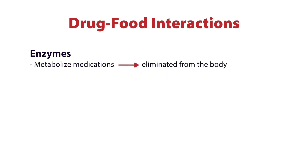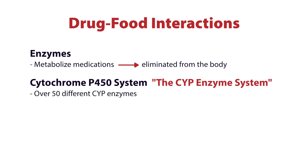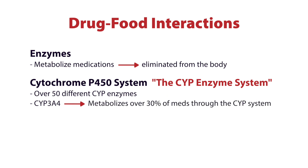One of the biggest enzyme systems in the body is the cytochrome P450 system, also nicknamed the CYP enzyme system. There are over 50 different CYP enzymes, but the biggest, most baddest workhorse enzyme of all of them is CYP3A4. CYP3A4 metabolizes over 30% of all the medications going through the cytochrome P450 enzyme system.